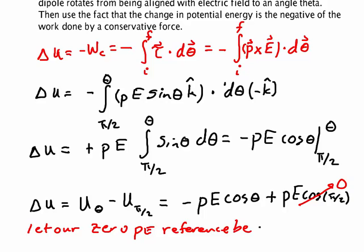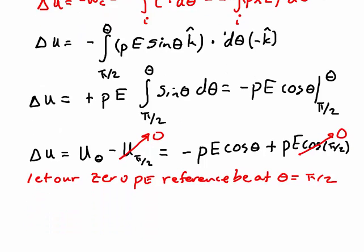Let our zero potential energy reference be at theta equal pi over two—that is, let that be zero. That's purely arbitrary; only change in potential energy has meaning. But if we do that, then we make our formula much like we did with gravity by letting y equals zero be our potential energy when we were starting out in physics one. We get that this u theta can now just be called u, and it's minus p times e times the cosine of theta.